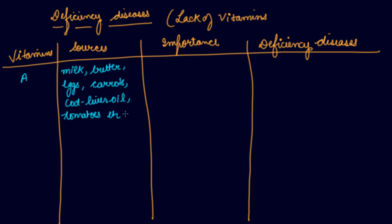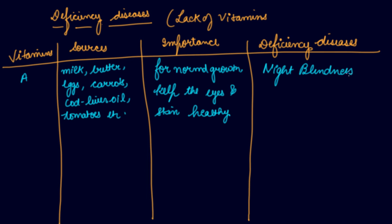These are the sources of vitamin A. Why do you require it? For normal growth and to keep the eyes and skin healthy. The deficiency disease is night blindness - inability to see in dim light - or irregular growth of teeth.